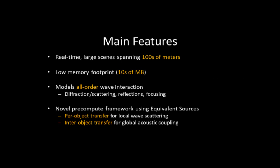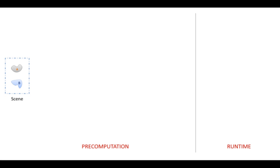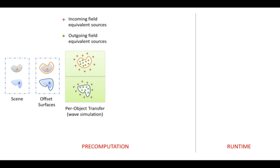We present a pre-computed wave-based sound propagation technique for large open scenes. As the first step of pre-computation, we decompose the scene into well-separated objects. Next, we compute an offset surface around each object. Local wave simulations are then performed on each object to compute its per-object transfer function. This function relates an arbitrary incident field to the resulting scattered field using an equivalent source formulation.